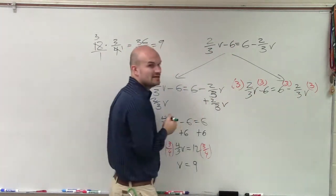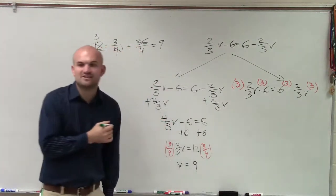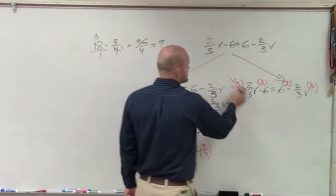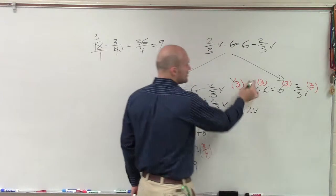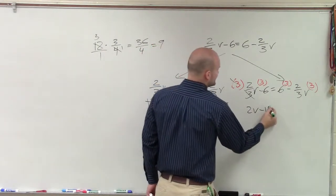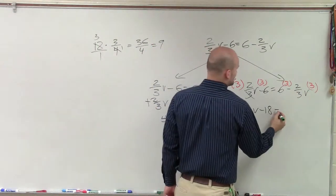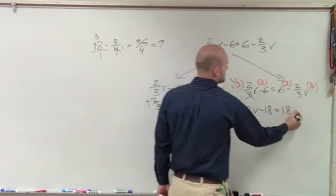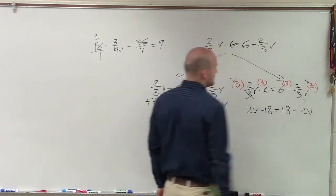Therefore, if I have the number 2, and it's being multiplied and divided by 3, I'm just going to be left with a 2v. 3 times negative 6 is negative 18. 3 times 6 equals positive 18, and minus 2v, as those are going to eliminate again.